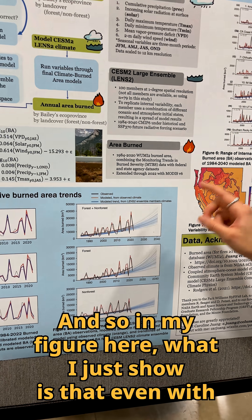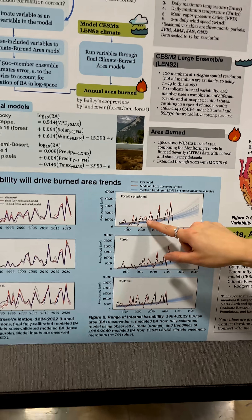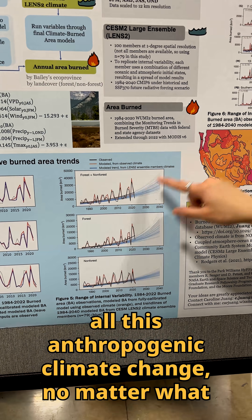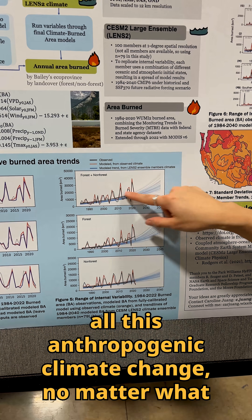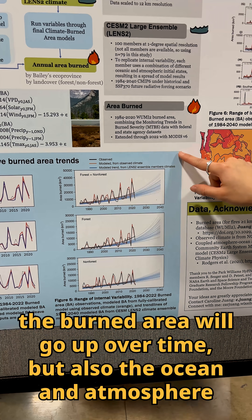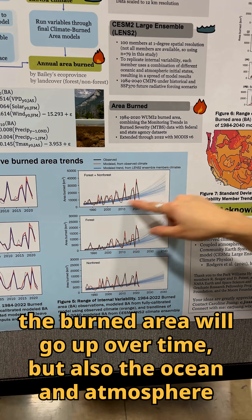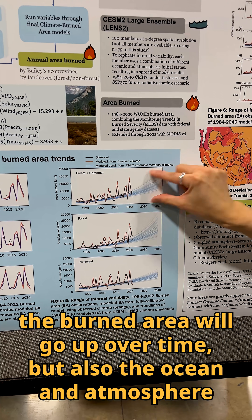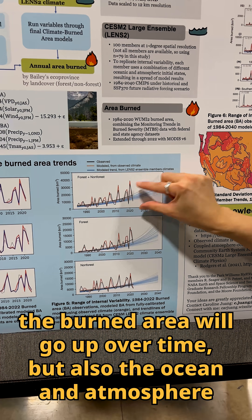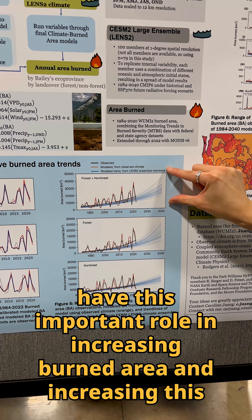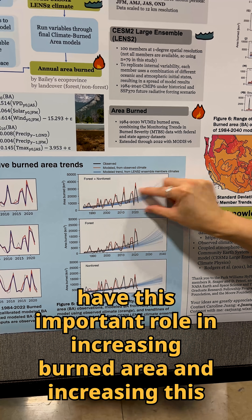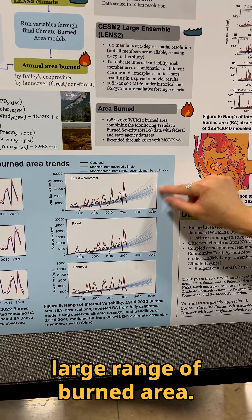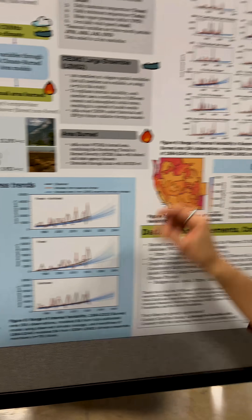I show that even with all this anthropogenic climate change, no matter what, the burned area will go up over time — but also the ocean and atmosphere have this important role in increasing burned area and increasing this large range of burned area.